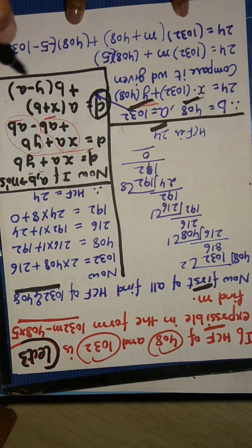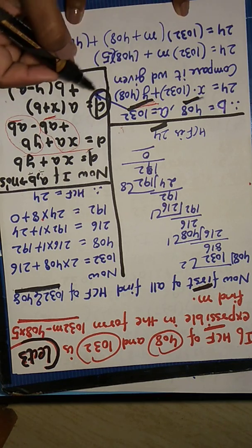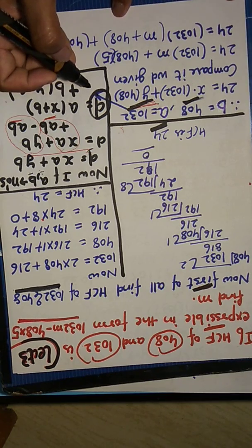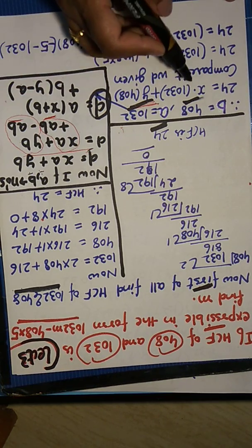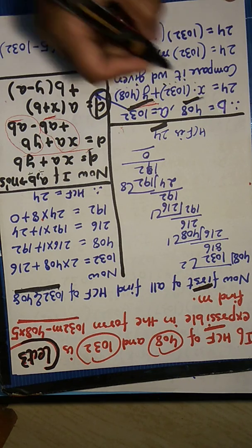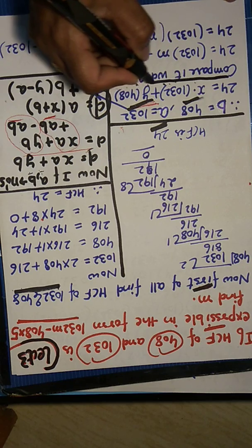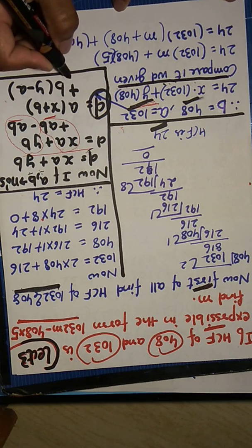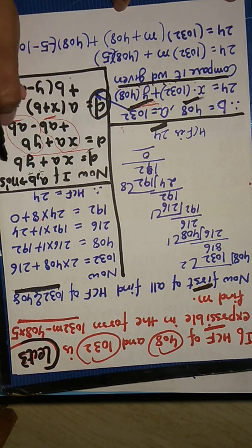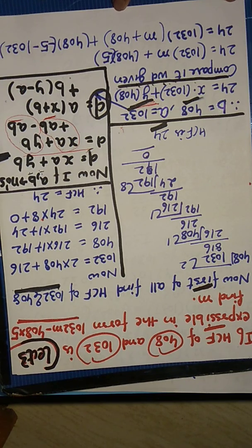Now see, how much value of A? What is the value of A? 1032. What is the value of B? 408. Okay, two numbers were given. A value is 1032, B value is 408.